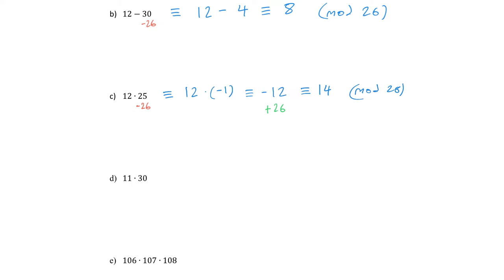Next up we have 11 times 30. From the 30, I'm going to take away 26. This time I'll be multiplying 11 times 4 to get 44 out of the deal. So 44 is bigger than 26. We can comfortably take away 26 from that, and as a result, we get 18. So our answer this time is 18 in mod 26.